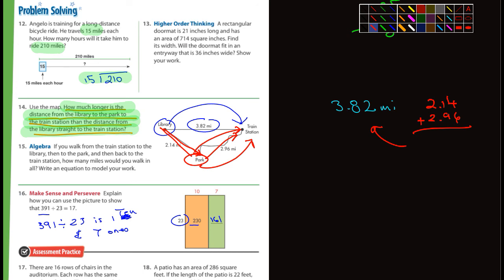And then number 16, that's the last one I think I helped you guys with. Explain how you can use the picture to show that 391 divided by 23 is 17. And basically I did it for you. It's 391 divided by 23. So you would ask yourself, what times 23 equals 230? What times 23, which is 7, equals 161? Because 230 and 161 add up to 391. That's it. I went kind of fast, faster than I did in the other one, just because I'm tired of repeating myself. Sometimes it just doesn't record properly, unfortunately. Anyways, I will see you guys tomorrow. That's it.